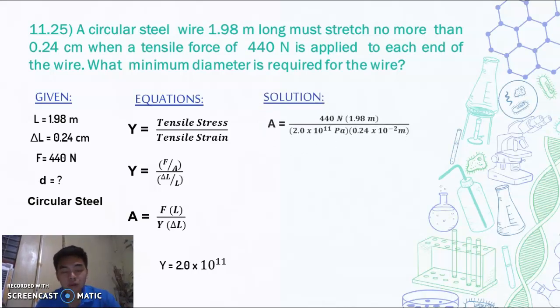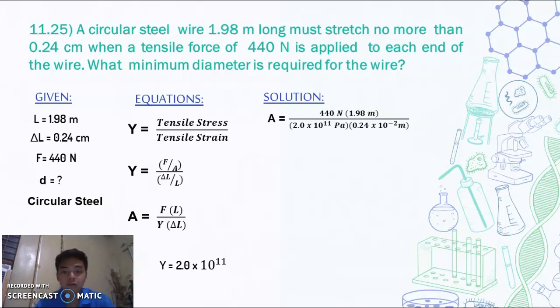For our solution, we just need to plot in our given to the equation. So using the formula for area, we will now get 440 N times 1.98 meter all over 2.0 times 10 to the 11 pascals times 0.24 times 10 to the negative 2 meter. So I converted the change in length into meters. So we'll get a value of 1.8 times 10 to the negative 6 meter squared. That is our area.